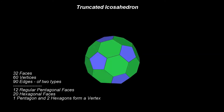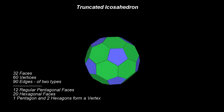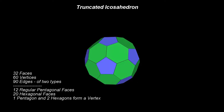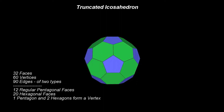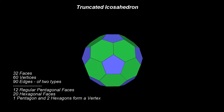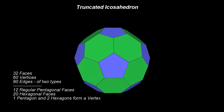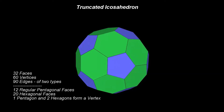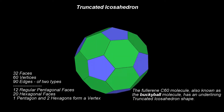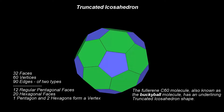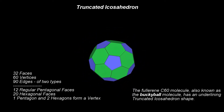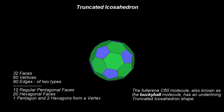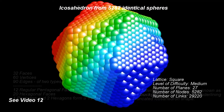Most people involuntarily associate this shape with the beautiful game, football. The classical soccer ball has this shape — the hexagons are white and the pentagons are black. In chemistry and nanotechnology, this shape and structure is used to describe the fullerene C60 molecule, also known as the buckyball molecule.